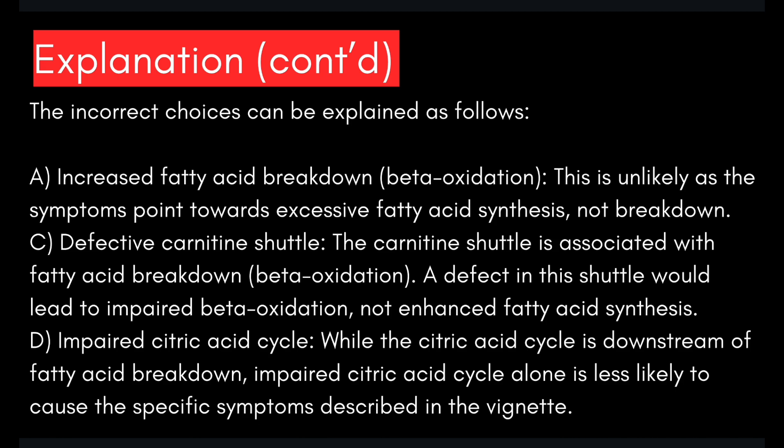The incorrect choices: A — increased fatty acid breakdown (beta oxidation) is unlikely as symptoms point toward excessive synthesis, not breakdown. C — a defective carnitine shuttle is associated with fatty acid breakdown; a defect would impair beta oxidation, not enhance fatty acid synthesis. D — an impaired citric acid cycle is downstream of fatty acid breakdown and is less likely to cause the specific symptoms described.